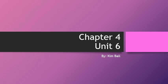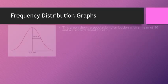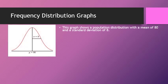Chapter 4, Unit 6: Frequency distribution graphs. This is how you would show a graph with the population distribution that has a mean of 80 and a standard deviation of 8.